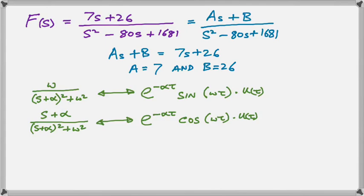On the left-hand side, we have the S-domain equation, and on the right-hand side, we have the time domain equation. So the frequency domain equation is on the left, and the time domain equation that corresponds to that exact expression is on the right. The two constants that we're looking for are omega and alpha, as you can see.